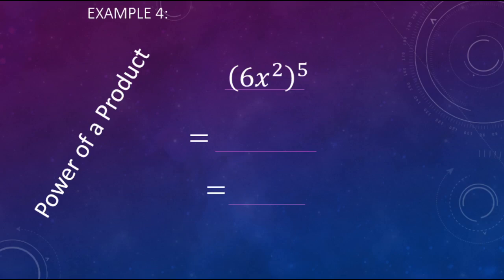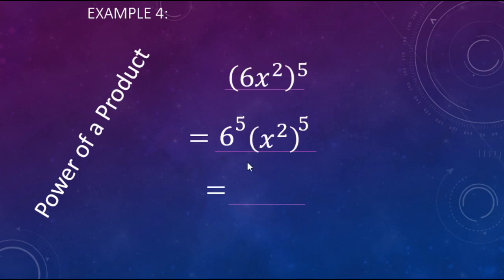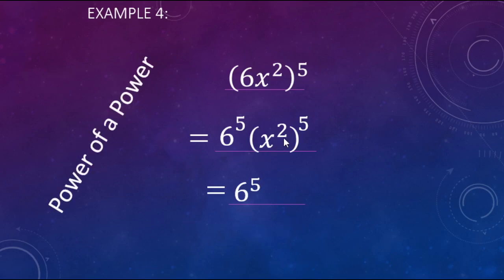Another example: here we have 6x squared to the 5th power. Using the power of a product property, 5 goes to the 6, giving us 6 to the 5th, and 5 also goes to the x squared. Then we have a power to a power — x squared to the 5th power — so we multiply those exponents, giving us x to the 10th power. You can write 6 to the 5th in standard notation if preferred, but this form is fine.